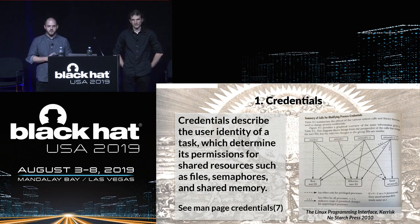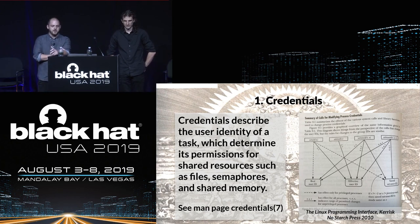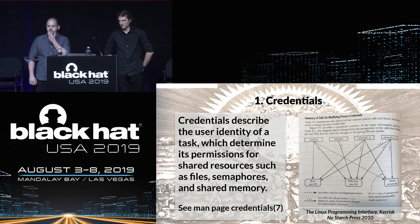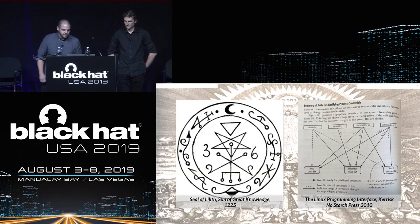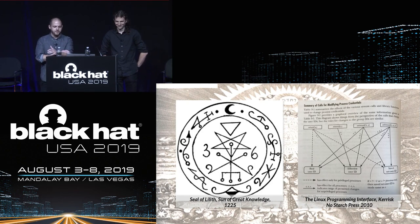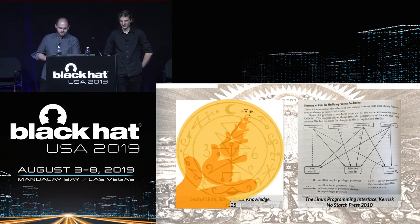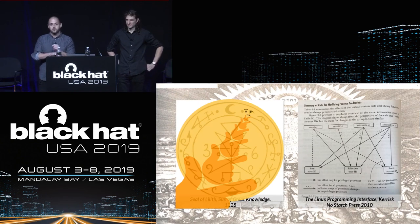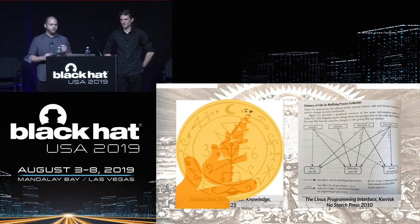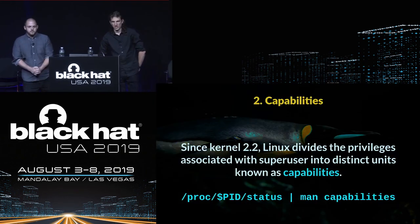The first container attribute is credentials. All tasks have credentials — they're used to associate a user identity to a task. These are the user and group IDs for permission checks, like when you're trying to access files. Credentials are not a coarse enough mechanism to restrict container privileges, and to address that, capabilities were introduced around kernel 2.2. Root privileges were separated into different groups known as capabilities. You can be semi-root, quasi-root — the margarine of root, the Diet Coke of root. Just one capability, not root enough.